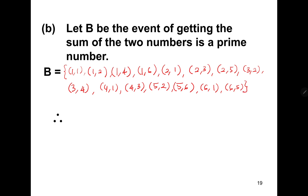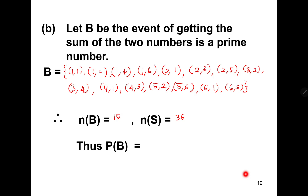These are all the elements of event B. Therefore, the number of elements of B is equal to 15, and the number of sample space is equal to 36. Thus, the probability of event B is going to be 15 over 36, which we may simplify to 5 over 12.